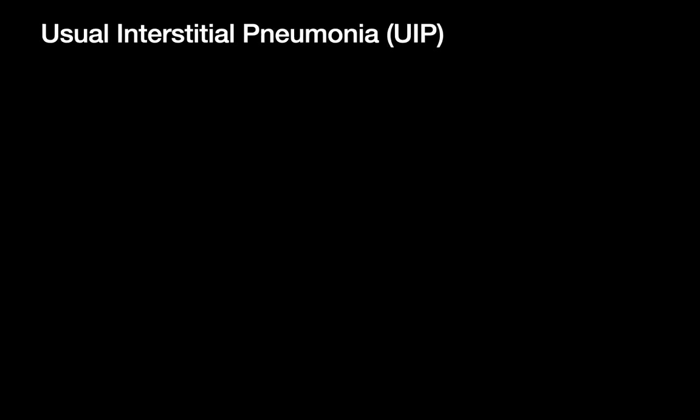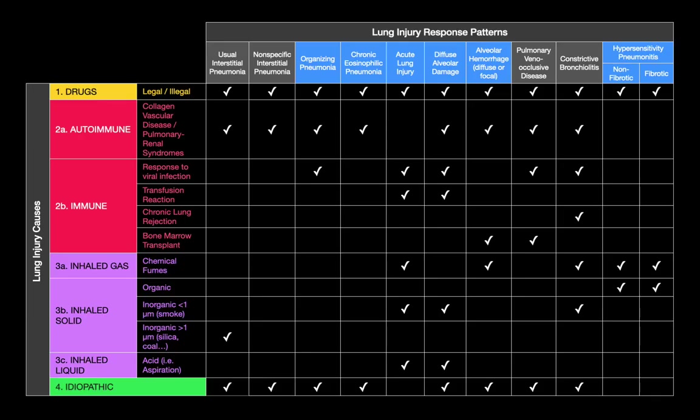Starting with UIP — we're going through the concept of lung injury response using a chart that sets out the different entities that tend to be irritants injuring lung parenchyma. They're broken down into drugs, immune phenomena, and inhaled phases of matter, with idiopathic as a fourth wastebasket group. Along the top are the ten different ways the lung may respond to any of these insults or injuries.